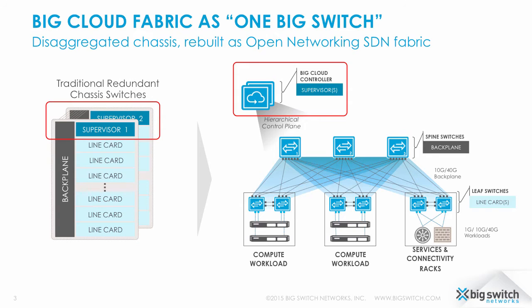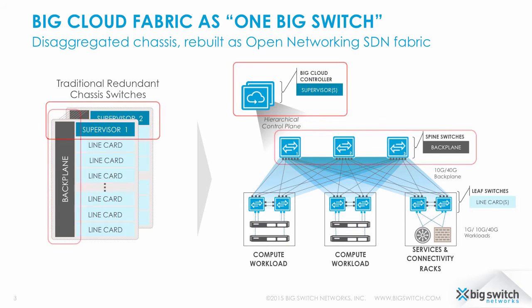Because the controller has a full view of the network and controls all forwarding, there's no need for a routing protocol or loop avoidance protocol, which simplifies the overall network operations.